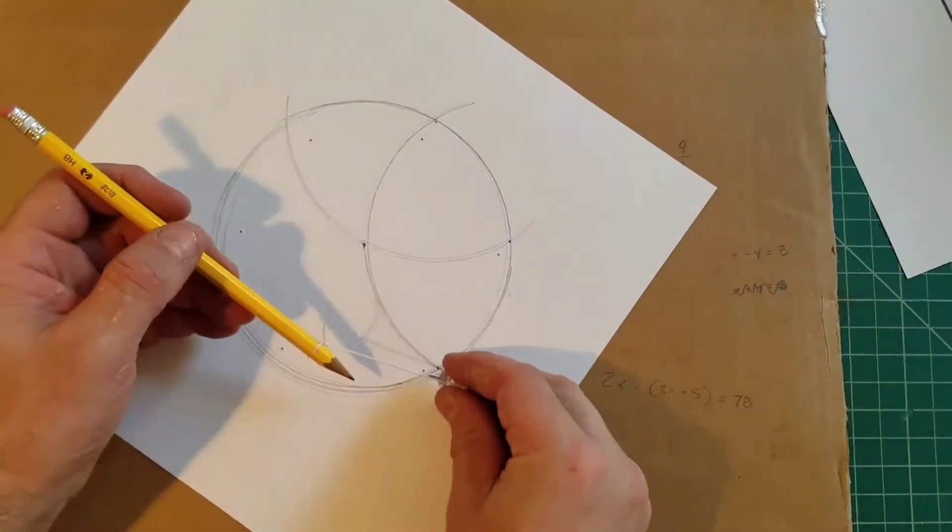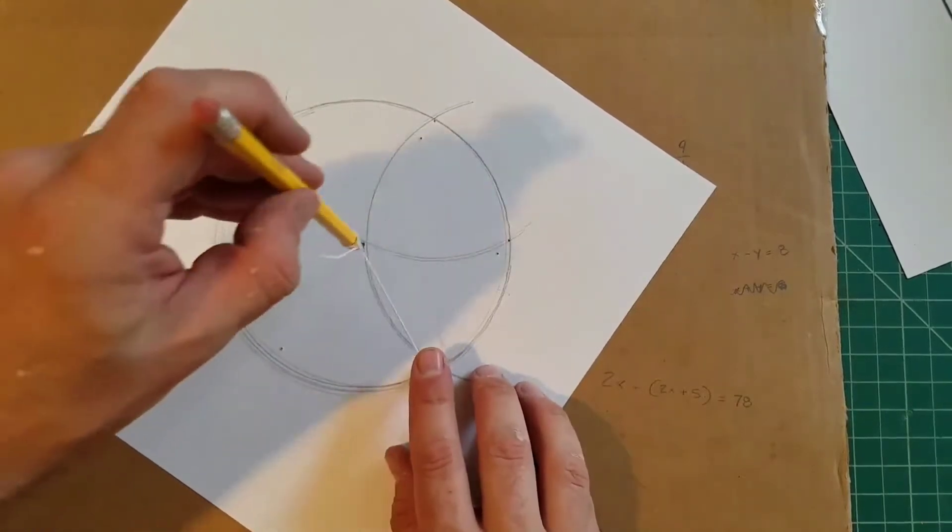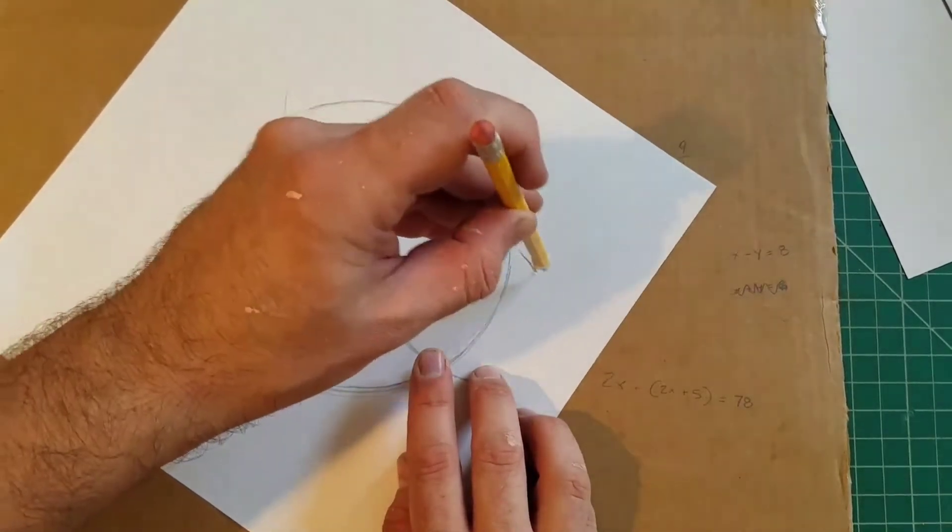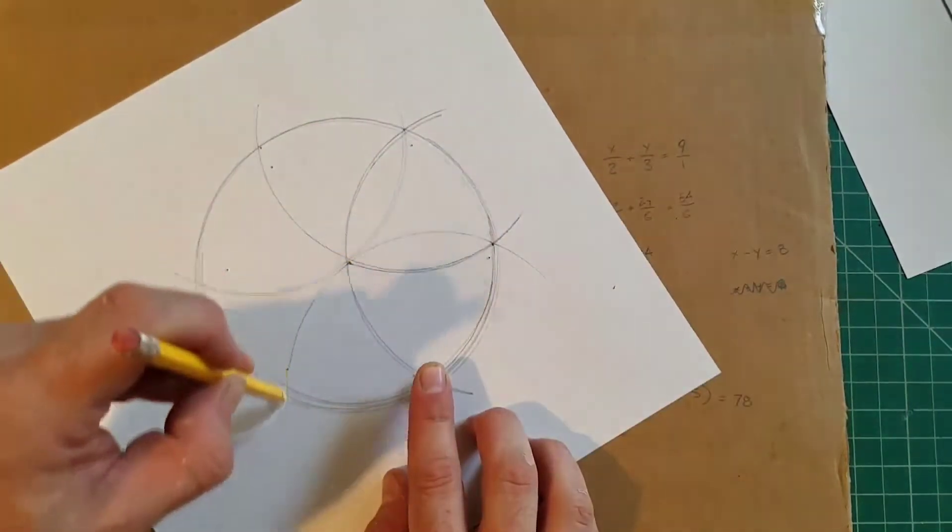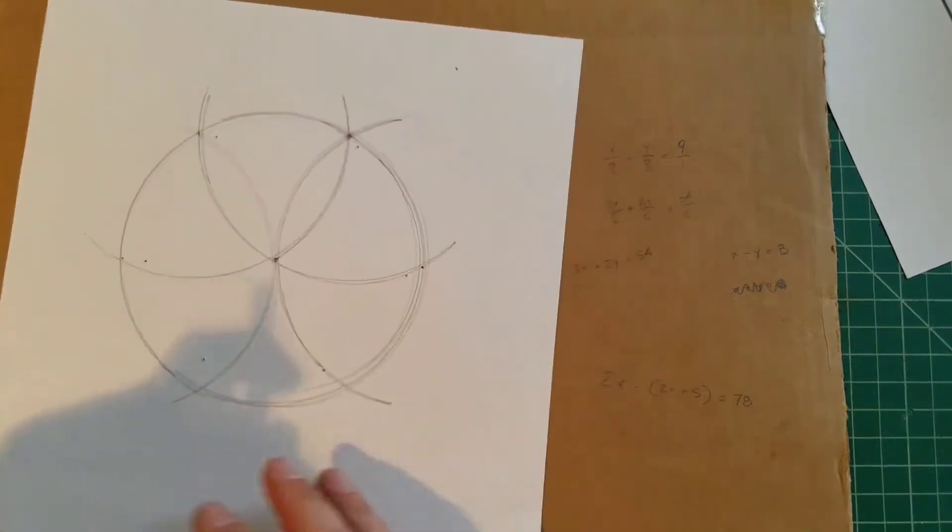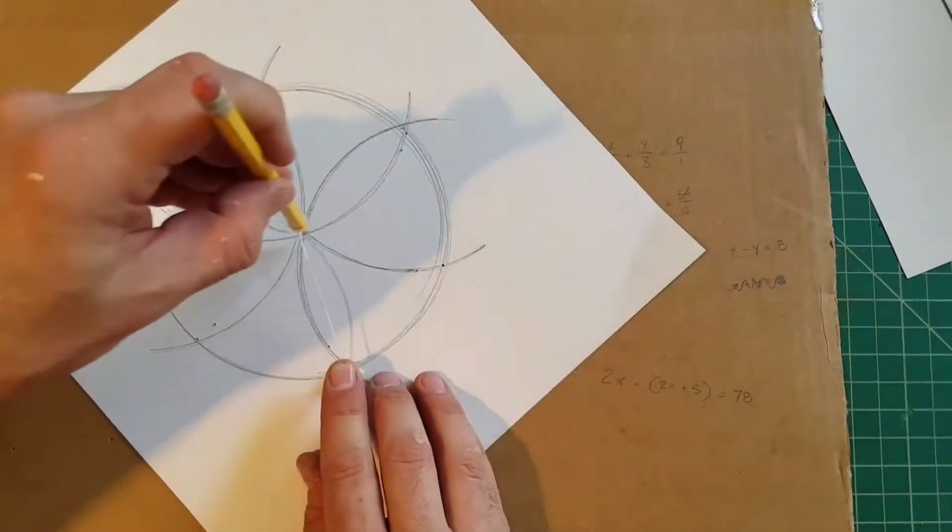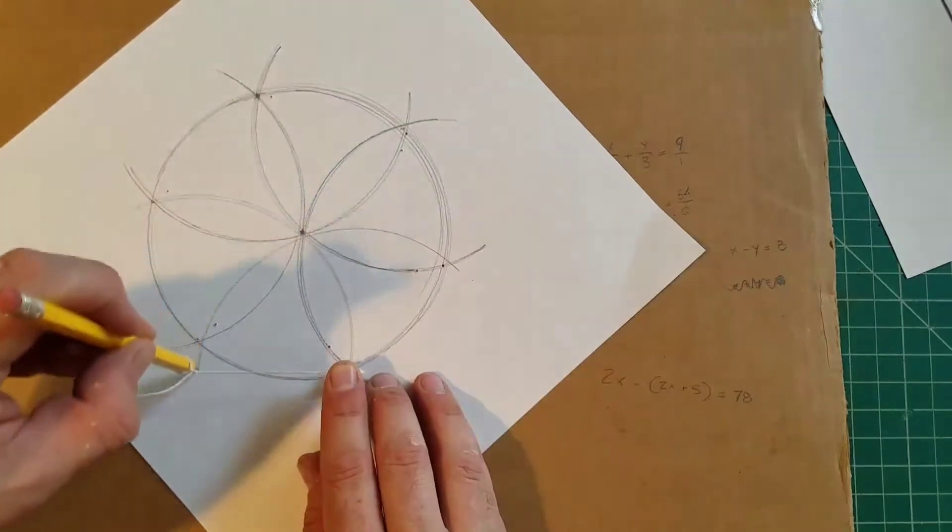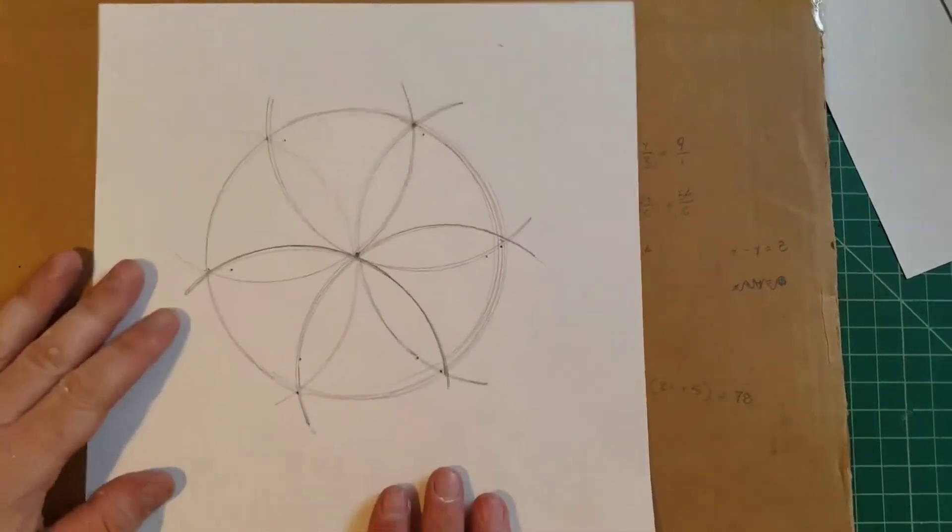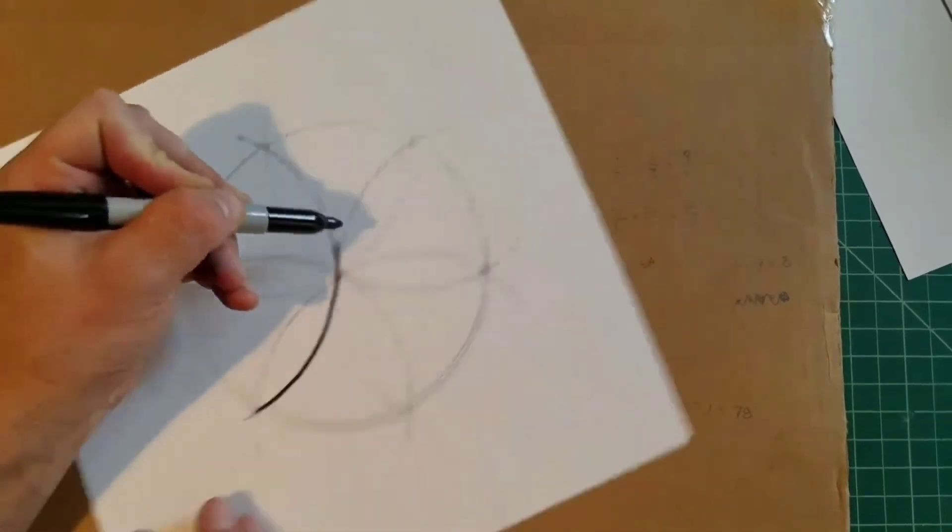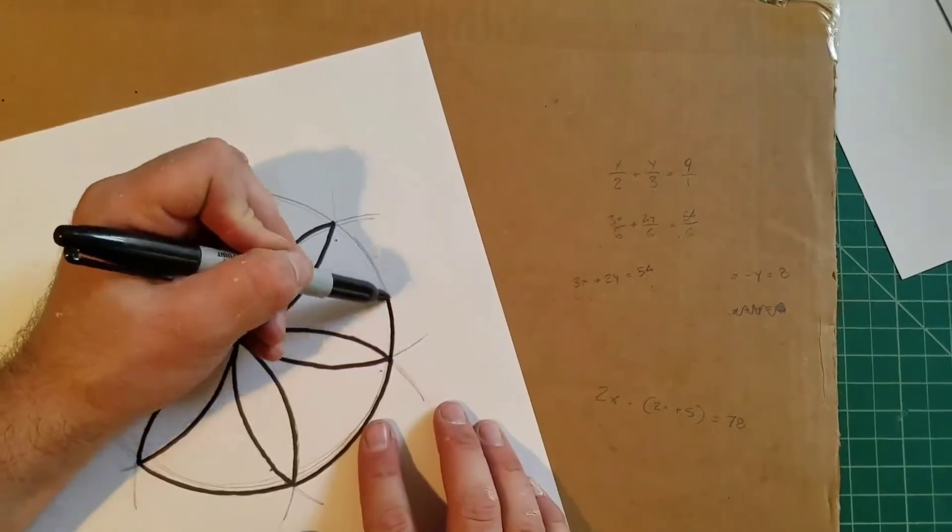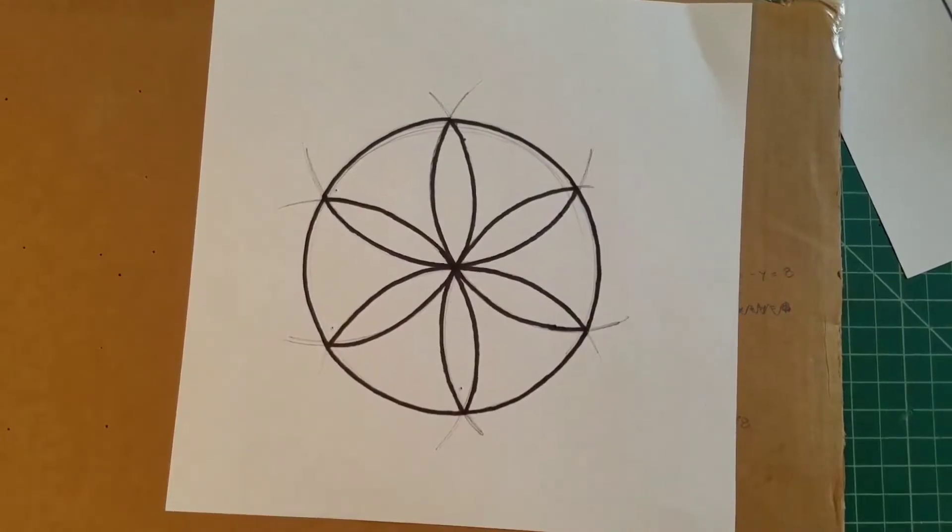I'm going to line it up with both the center of the circle and the intersection I just created. Swing that arc. I like saying swing an arc. When I'm doing my math, I sound cool because math is cool. Intersection, center. My hexagonal floret.